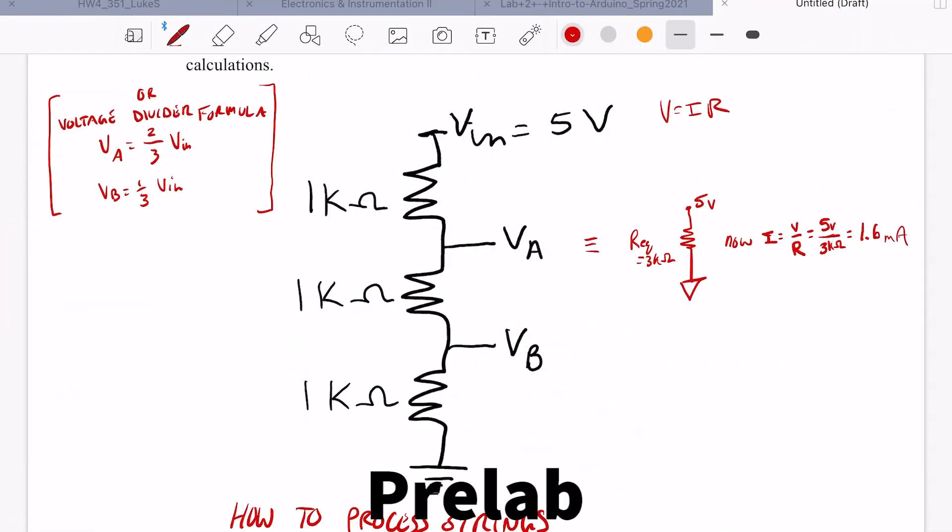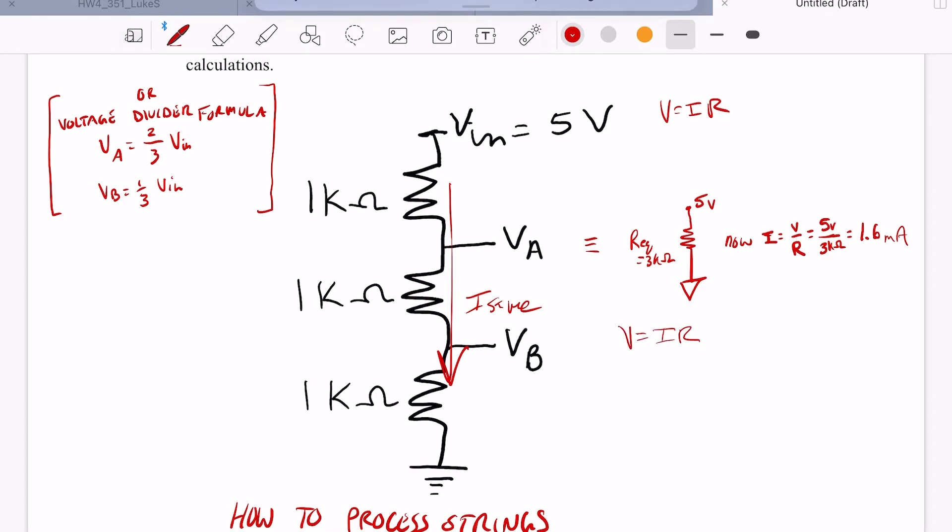Okay, to find Va and Vb, we can take advantage of the fact that this is all in series and the current will be the same. So if we find that current through this circuit, then we can use Ohm's law to find the voltage across any resistance in the circuit.